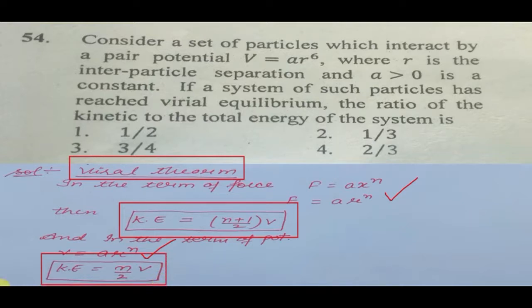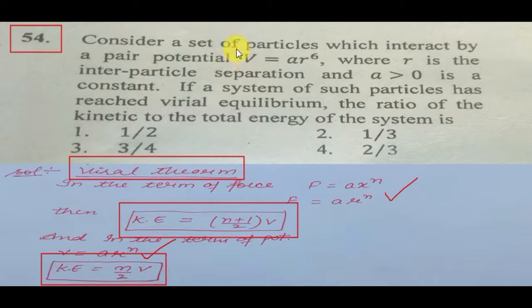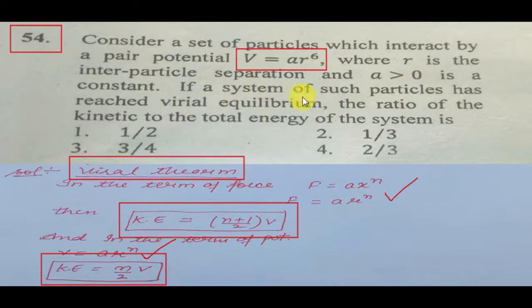Now we come to question number 54 from CSIR. The question: consider a set of particles which interact by a pair potential v = ar^6, where r is the inter-particle separation and a > 0 is a constant. If a system of such particles has reached virial equilibrium, what is the ratio of kinetic to total energy of the system?